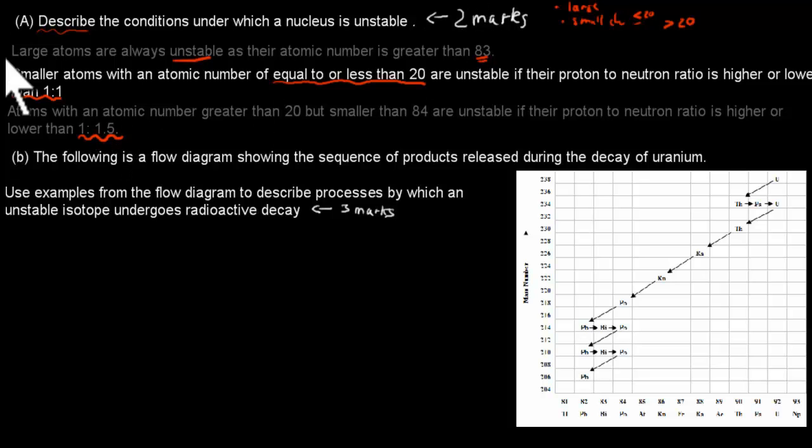So this will give you, we've described that if they're too large they're always unstable, and we've given the whole 1 to 1 and 1 to 1.5 ratio. So this will give us our full two marks.